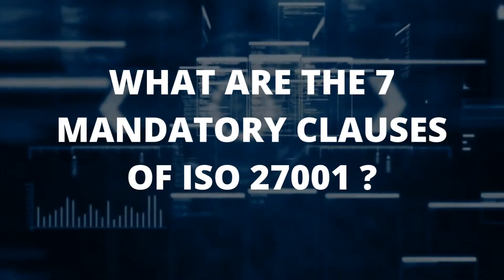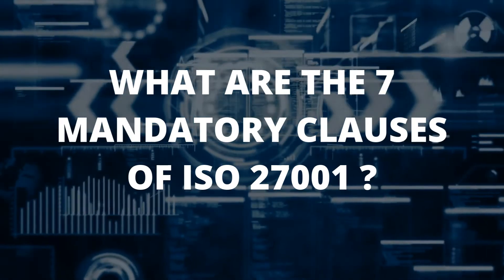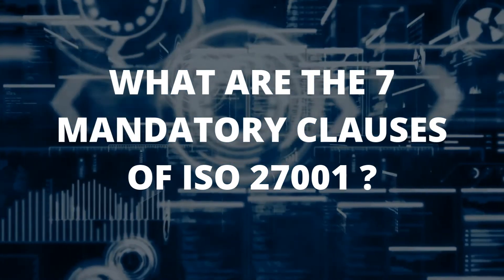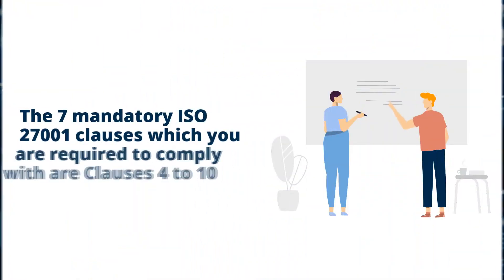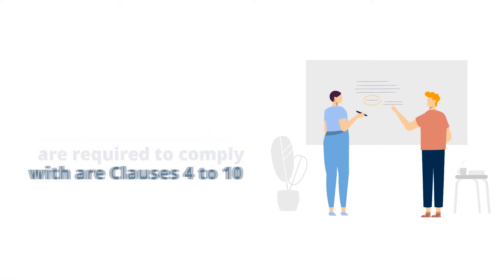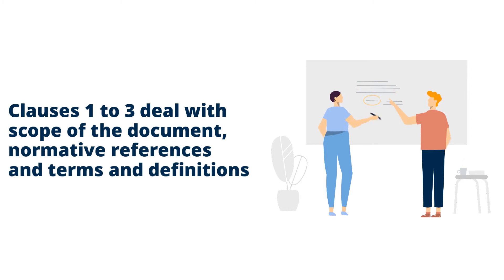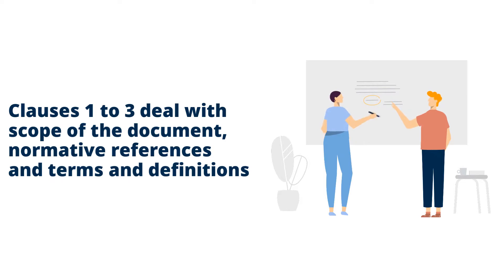What are the seven mandatory clauses of ISO 27001? The seven mandatory clauses which you are required to comply with are clauses 4 to 10. Clauses 1 to 3 deal with scope of the document, normative references and terms and definitions.